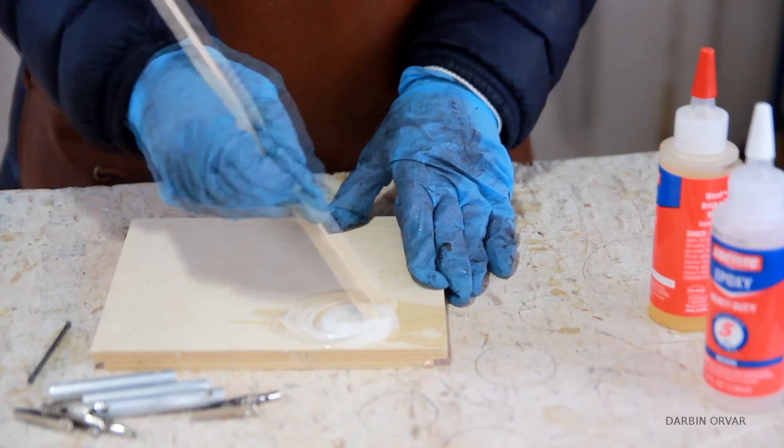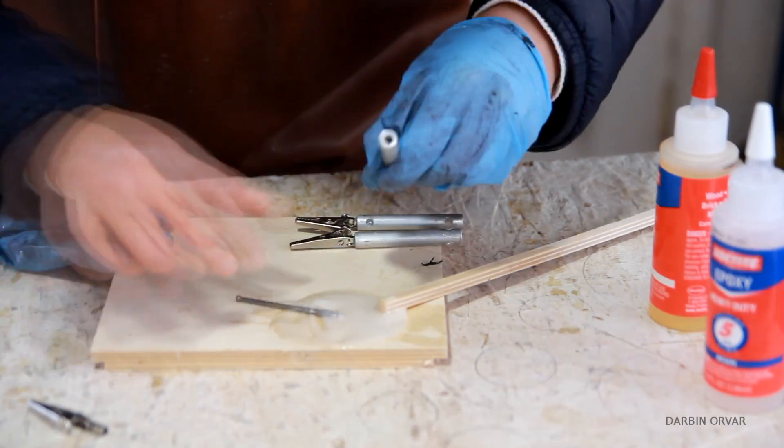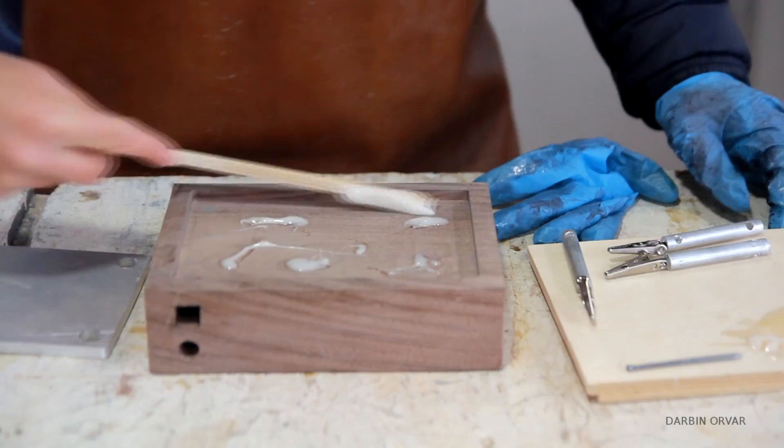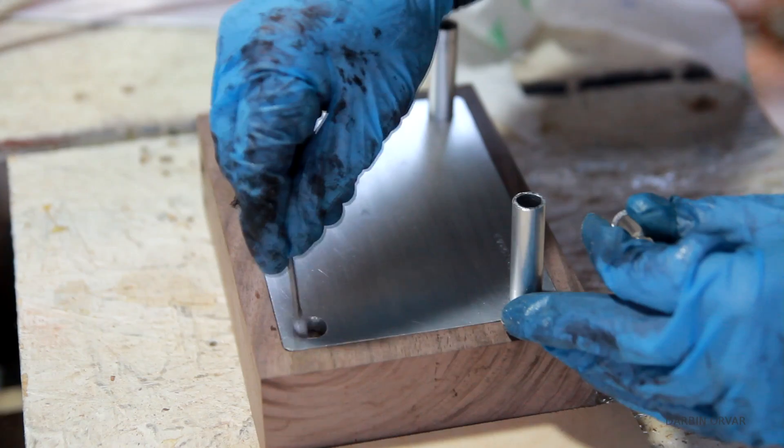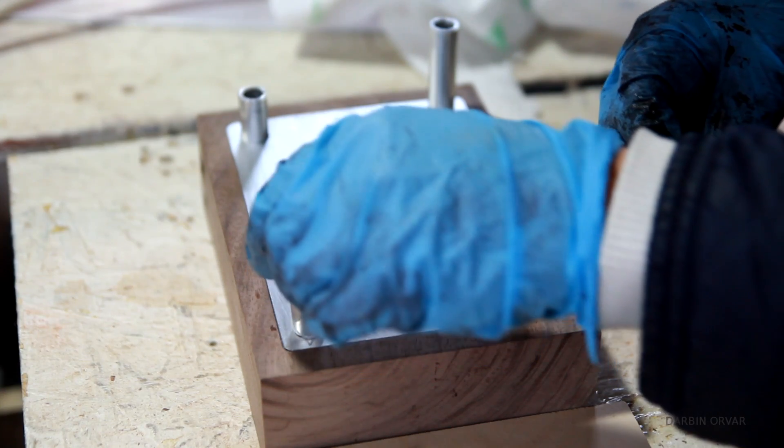Now time to attach everything together. So I'm mixing up some epoxy and I'm fitting the alligator clips in the rods. And I'm also gluing the aluminum to the walnut.